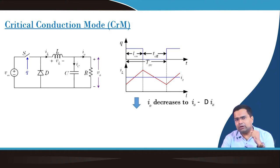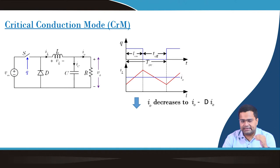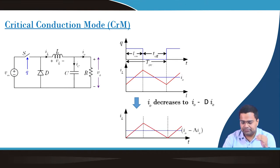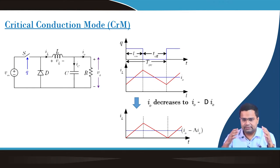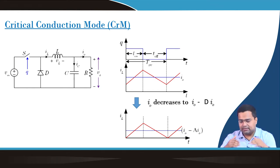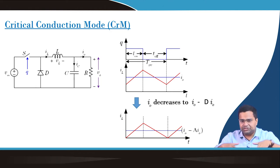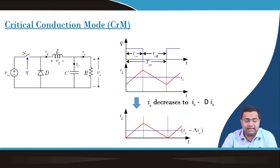If the load current decreases under the same operating condition — from I0 to I0 minus delta I0 — then the average inductor current will go down. At the critical case, the valley current just touches zero, and this condition is called critical conduction mode.